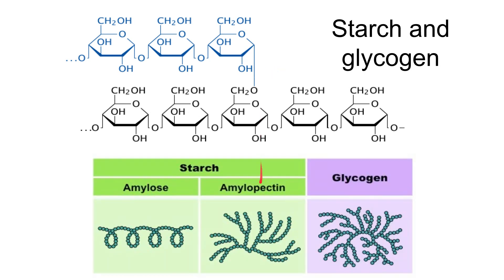There are three molecules to know: amylose and amylopectin, which collectively make up starch found in plants, and glycogen found in animals. Amylose is a helical structure made of a long chain of alpha glucose with 1-4 linkages — the bonding angle produces the helix. Amylopectin also has 1-4 linkages but includes branch points where carbon one has reacted with carbon six. Glycogen is very similar to amylopectin but has far more branch points.